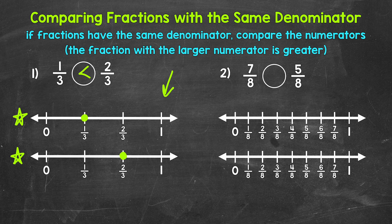We have the same denominator, so we can just compare the numerators. Seven is greater than five.